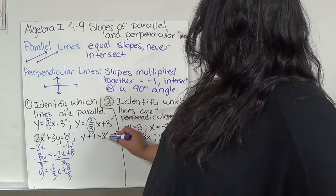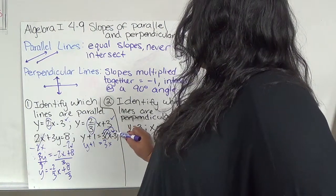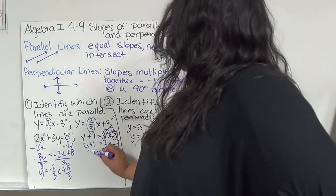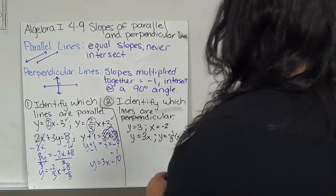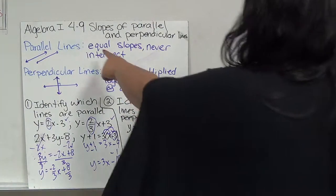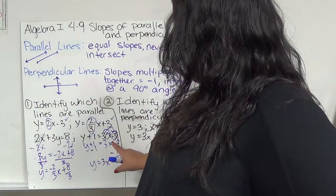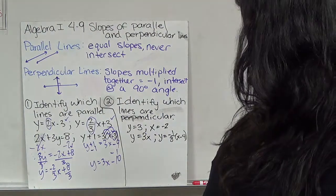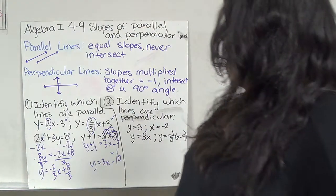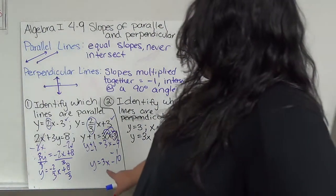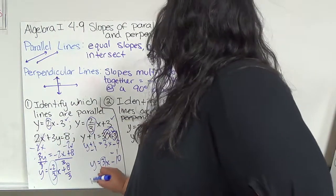The next one, I have to distribute here first. So y plus 1 equals 3 times x, and then 3 times negative 3 is negative 9. Then I'm going to subtract 1 from both sides, so y equals 3x minus 10. So we're looking for parallel lines, and parallel has equal slopes. In this case, this doesn't match any of them. It looks like none of them are parallel.